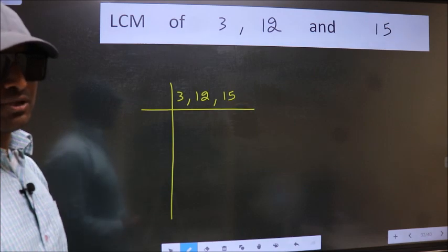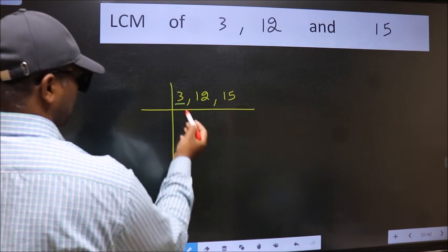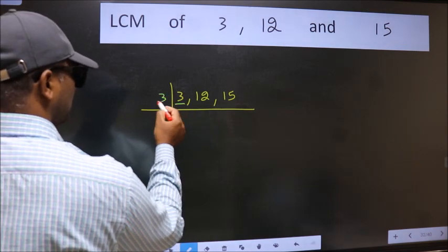Now we should focus on the first number which is 3 here. 3 is a prime number. So 3, 1 is 3.